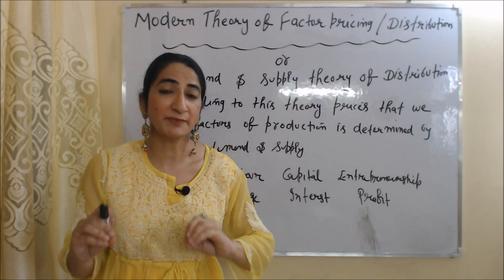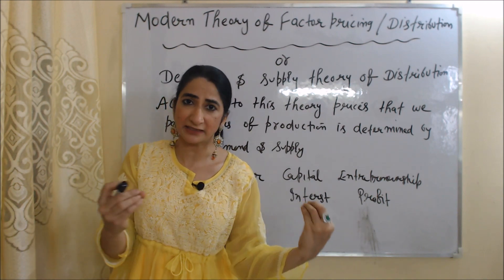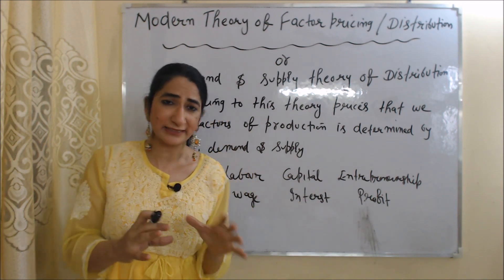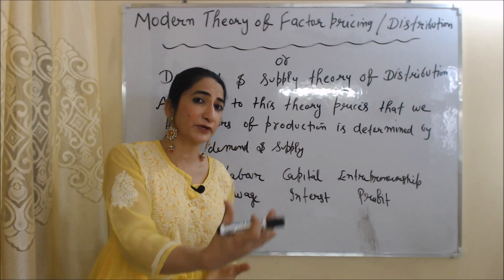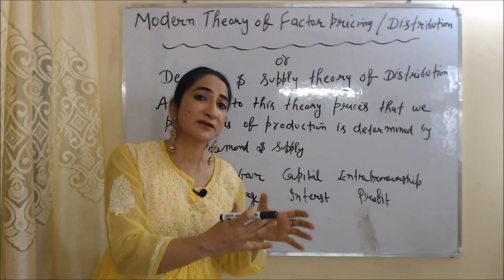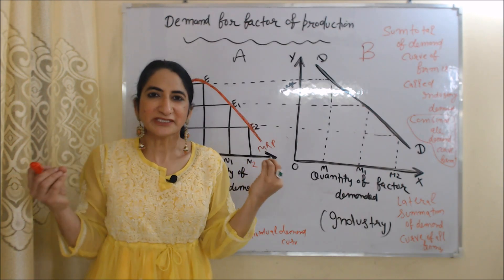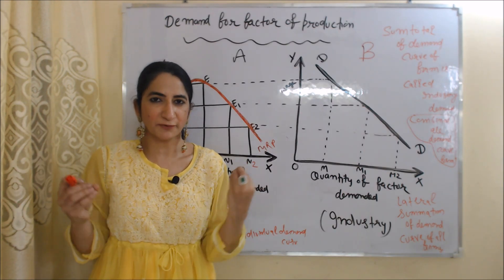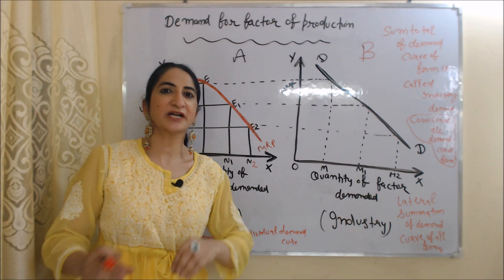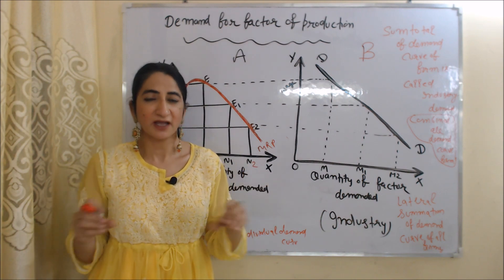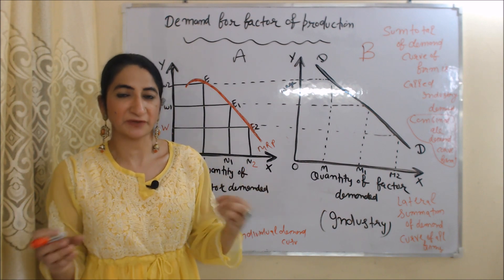According to this theory, prices of factors of production are determined by their demand and supply — how much rent, wage, interest, and profit will be paid to factors of production for their services is determined by demand and supply. In this theory, we will talk about demand for factors of production, supply of factors of production, and the determination of factor pricing. Firstly, we are going to talk about demand for factors of production.